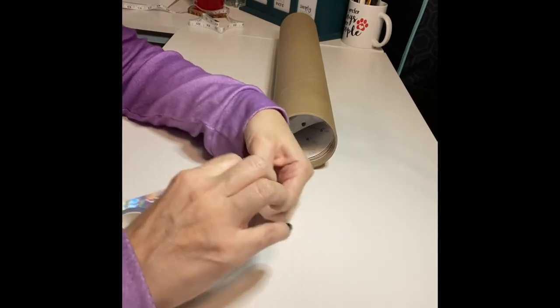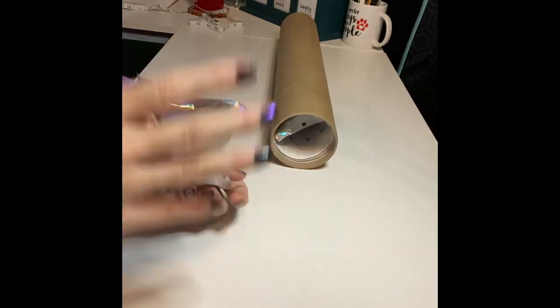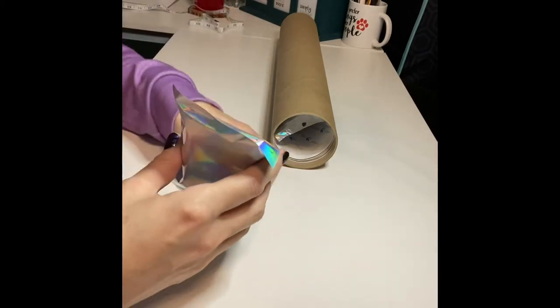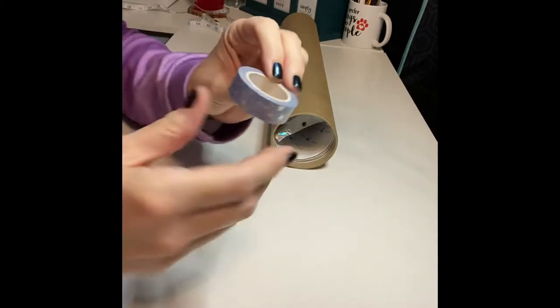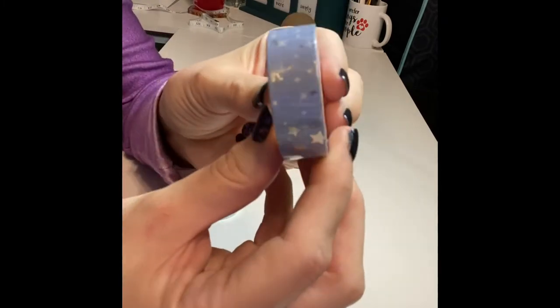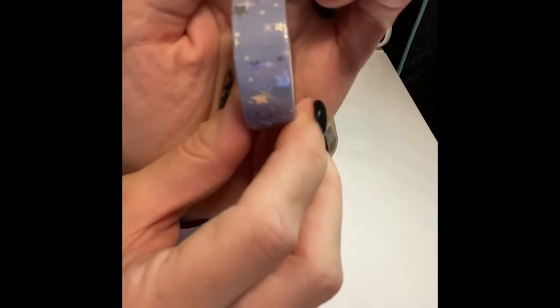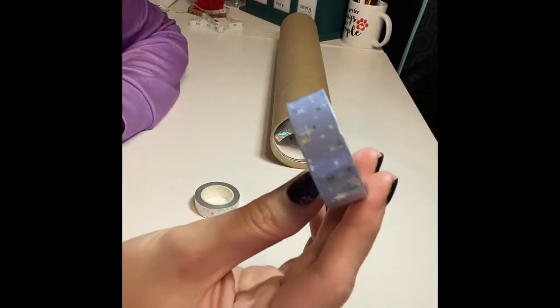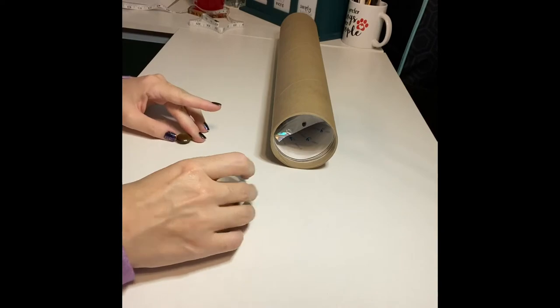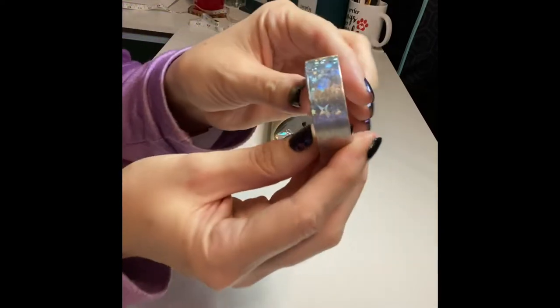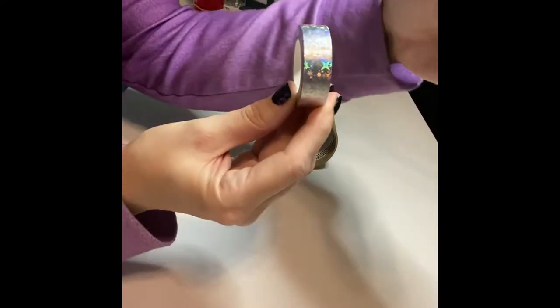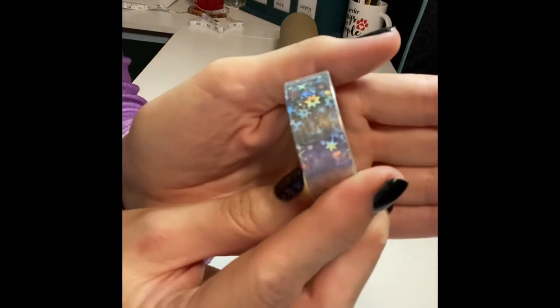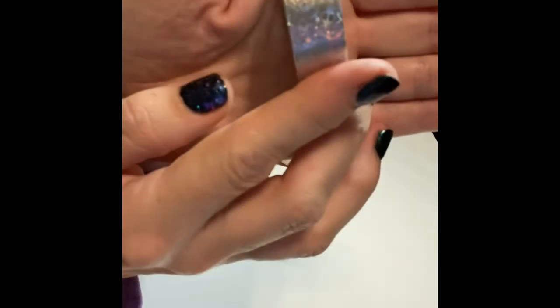Okay so this is some of the washi tape that I bought. Sorry about the crinkling. These plastic bags are always crinkly. So this first one is a pale blue with silver stars and white stars. So pretty. And then this other one is holographic. Let's see if I can actually make it do what it's supposed to. See the holographic stars there. It's so pretty.